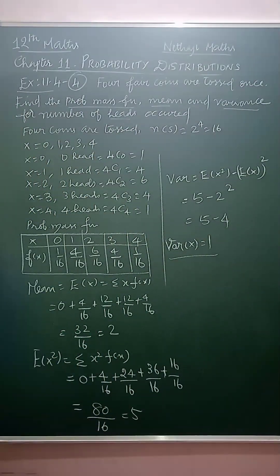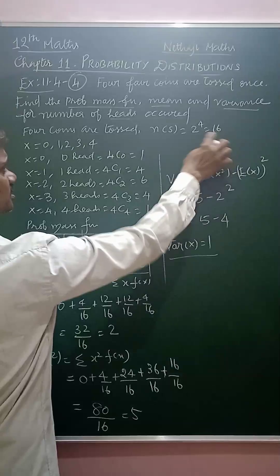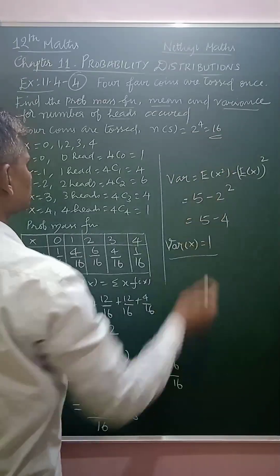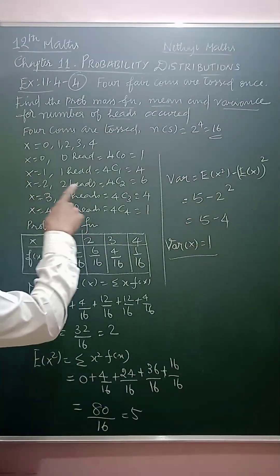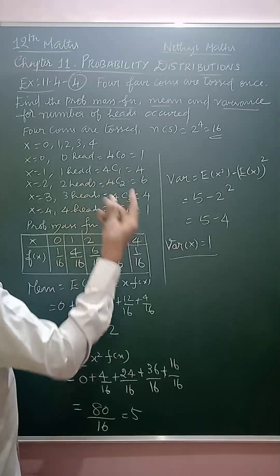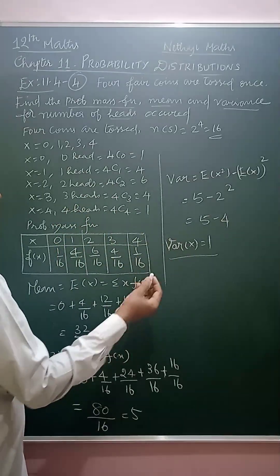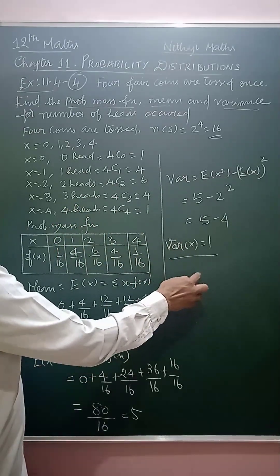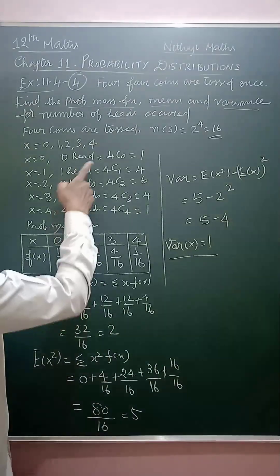So, 4 coins are tossed means we have the sample space as 16. 2 power 4 that is 16 sample space. So, we will evaluate the combination of values. If you have 4 coins, you can use the combination of values.